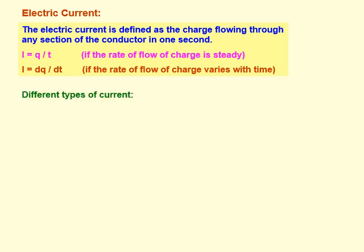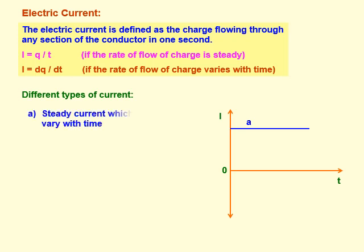There are different types of current shown graphically. The first graph is parallel to the time axis, so it represents steady current — the current value has not changed with time. Steady current does not vary with time.